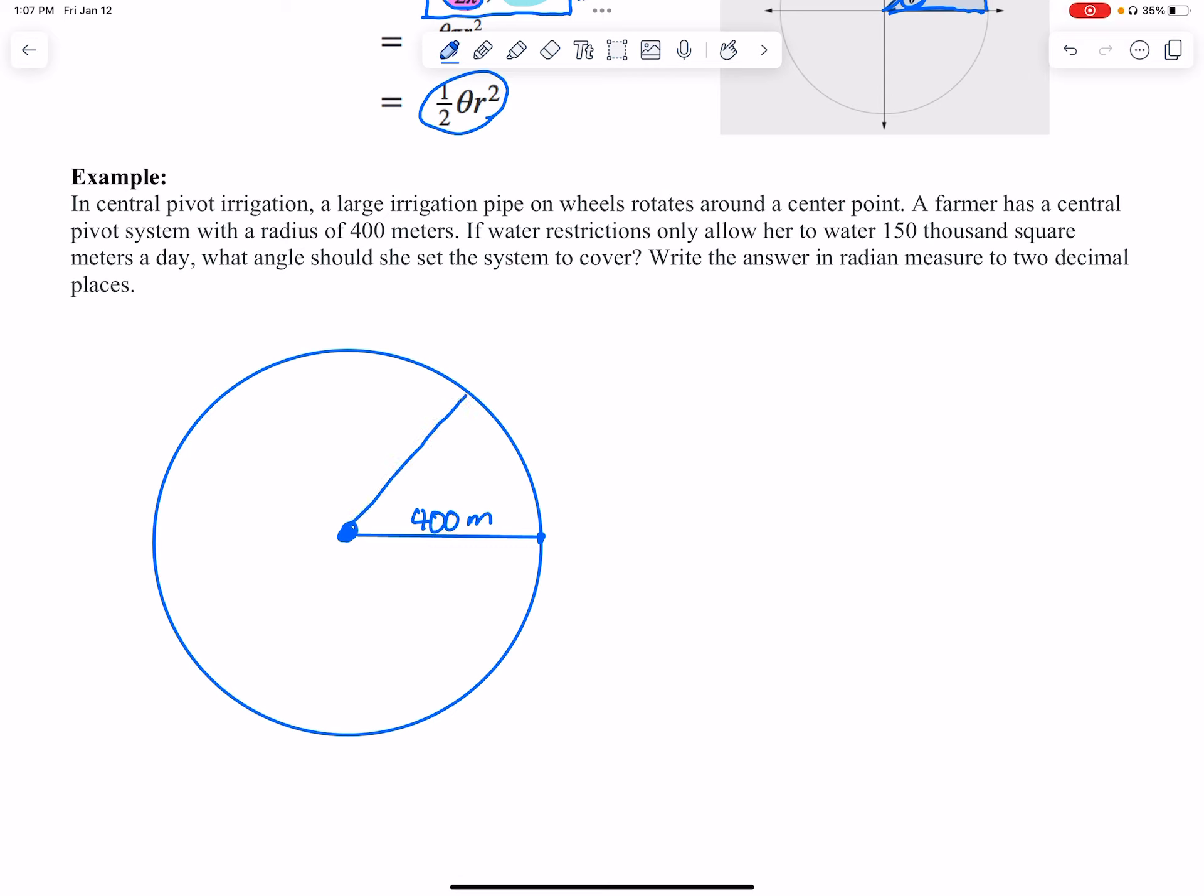What we actually need to find is we want the area inside here to be no bigger than 150 square meters. So we're gonna use the formula that we just received above.